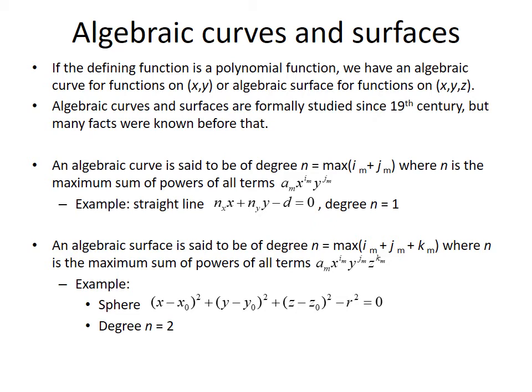A degree of an algebraic curve is a number n which is the maximum sum of powers of all terms with multiplication of x and y. A straight line has a degree of 1. An algebraic surface also has a degree. For example, a sphere has a degree of 2.